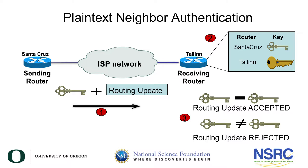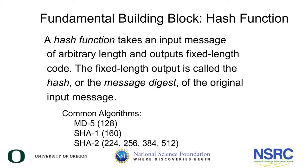Much better is to use cryptographic protection. For route authentication, the fundamental building block is a hash function — a mathematical function that takes an input message of arbitrary length and produces a fixed-length output, called a hash, message digest, or fingerprint. Common algorithms include MD5 with a 128-bit output, SHA-1 with a 160-bit output, and SHA-2 variants with 224, 256, 384, or 512-bit outputs.